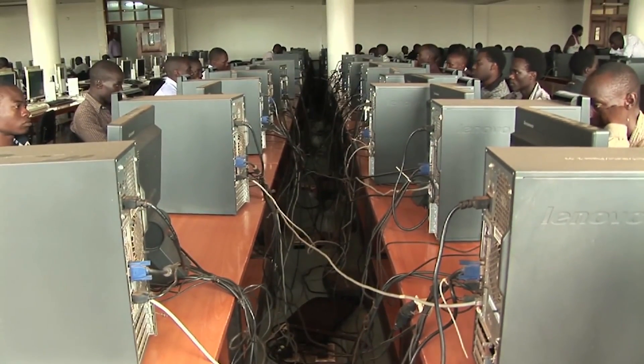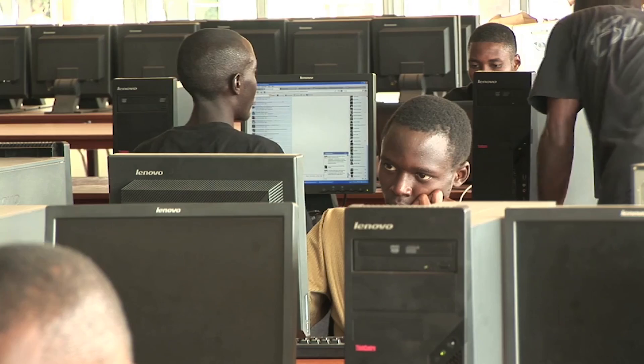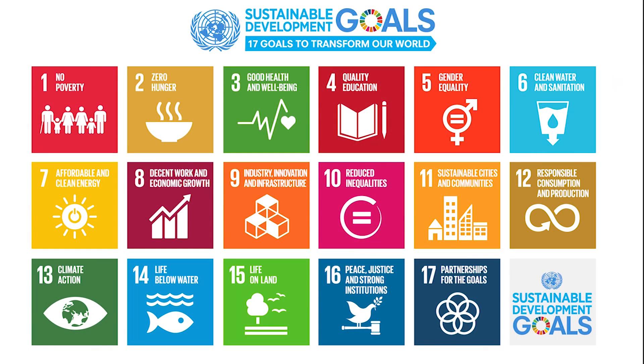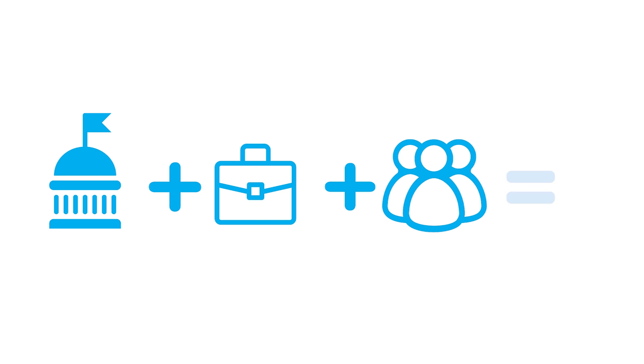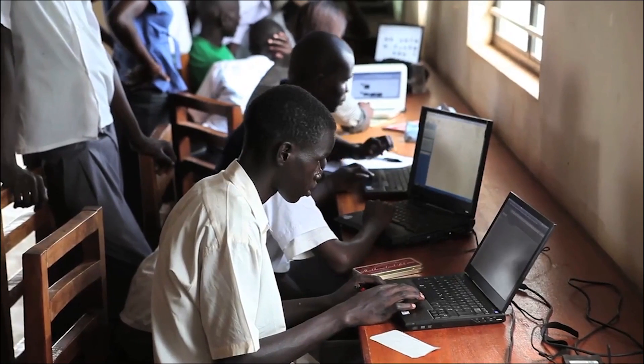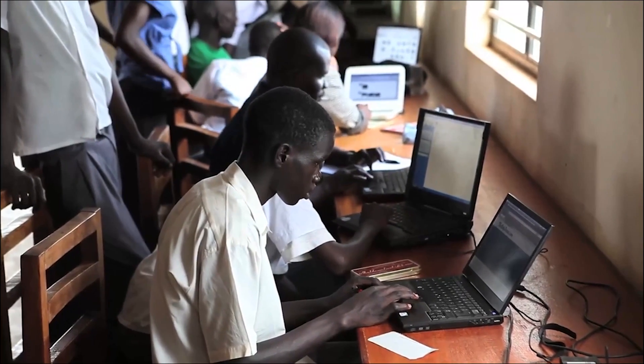The amount of data produced globally is more than doubling every year. Harnessing this data revolution is key for achieving and monitoring progress towards the Sustainable Development Goals. The public sector, the private sector, and civil society must all work together to achieve a future in which big data is used responsibly as a public good to ensure that no one is left behind.